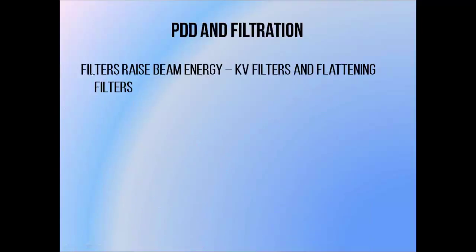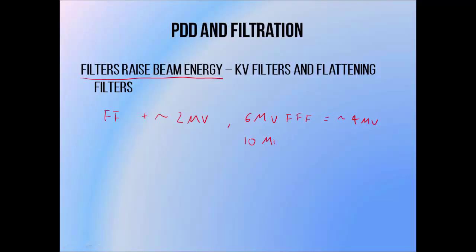Beam filtration affects megavoltage beams as well, normally as an effect of the flattening filter or any wedge filters placed in the path of the beam. Passing through a flattening filter results in beam hardening — an increase in the effective energy of the beam due to preferential attenuation of low energy photons. Passage through a flattening filter raises a beam's effective energy by about 2 MV. So flattening filter-free beams will have PDD curves similar to a beam of slightly lower energy: a 6 MV FFF beam produces a PDD similar to a 4 MV flattened beam, and a 10 MV FFF beam produces a PDD similar to an 8 MV beam.